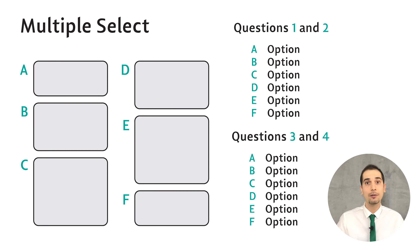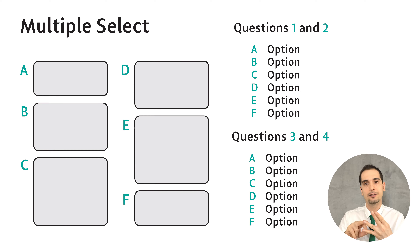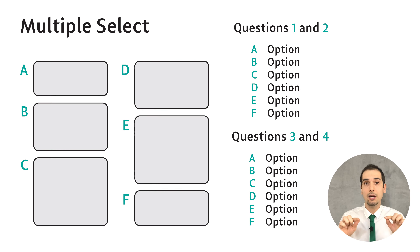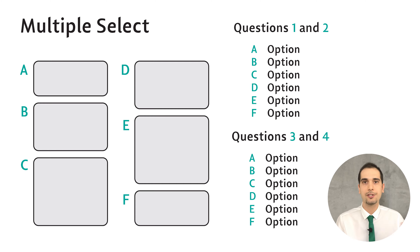Generally, the questions are in order in the passage. For example, questions one and two come first, then three and four — they appear in order in the passage. But the options — A, B, C, D, E — are not in order in the passage. Only the questions are in order.